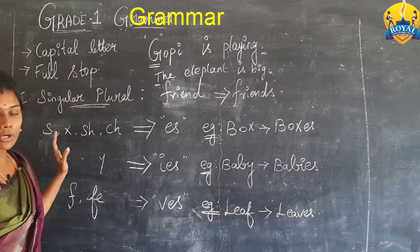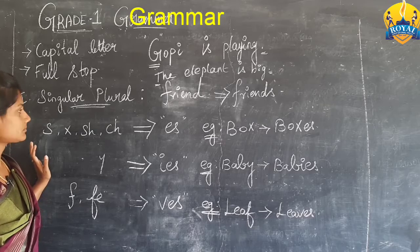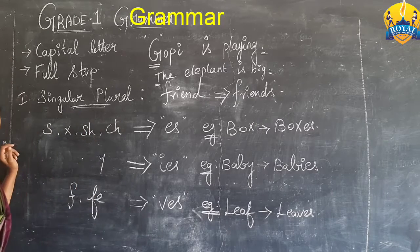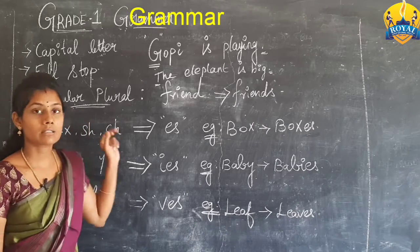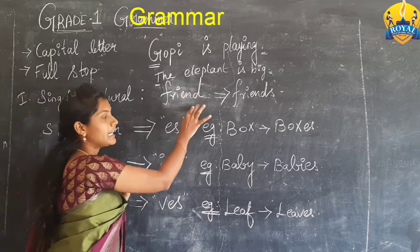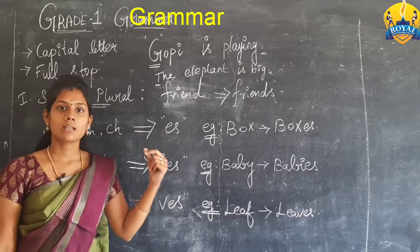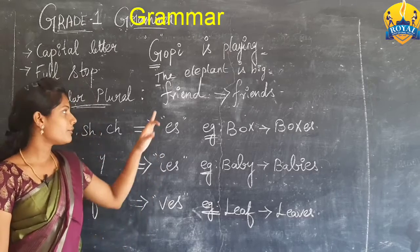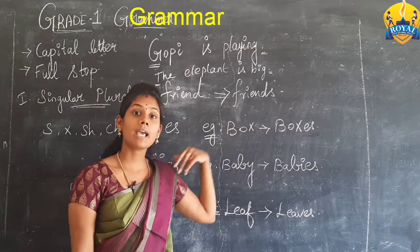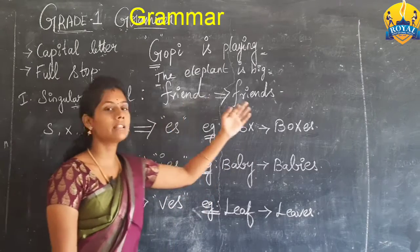Are you all clear? Shall we move on to the next one? Take page number 20. We are going to see singular and plural. Singular means single — for example, 'friend' means there is only one person. 'Friends' means many — I have many friends. This is singular and this is plural.